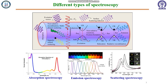Spectroscopy completely depends on the interaction of light with matter. If light falls on a sample, different types of interactions can occur: absorption of light, scattering of light, and transmission. Using these different components of light, different types of spectroscopy techniques have been discovered.